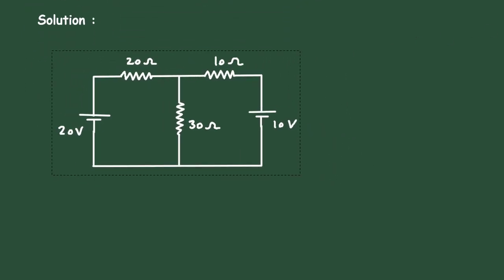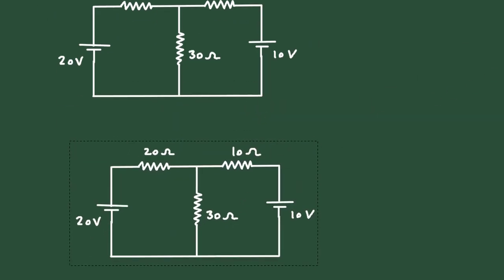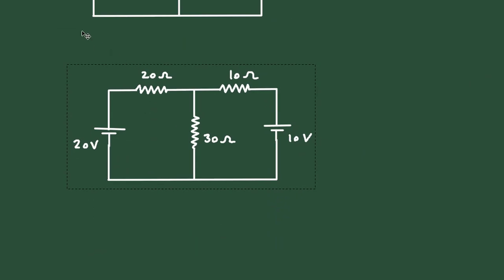Solution. Here we can see this 10 volt and this 10 volt — together they are 20 volt. These are connected in series with 20 ohm and 10 ohm respectively. So now we will convert them into their equivalent current sources. Here the 10 ohm resistor is currently connected in series, so it will be connected in parallel with the current source.